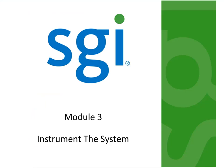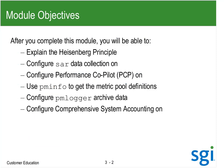After inventory, you then have to instrument the system and start collecting the data that you want. Some of it's automatically on, some of it is not. Primarily, I want to talk about three things: SAR, Performance Co-pilot, and CSA accounting.